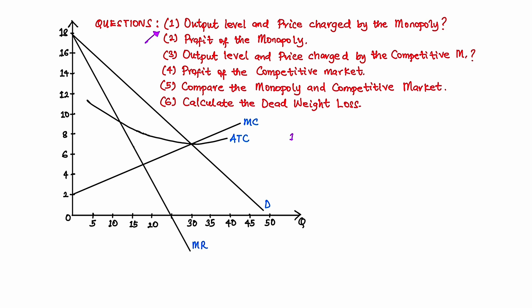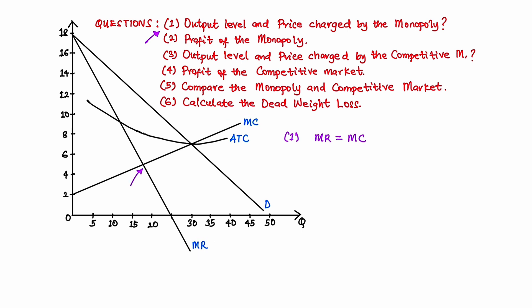To answer question one, we use the profit maximization rule, which says that for any firm to make the maximum profit, a firm will make maximum profit at the point where the marginal revenue is equal to the marginal cost. Given that this is the marginal cost curve and this is the marginal revenue curve, the firm will make maximum profit at the point where the marginal revenue cuts the marginal cost. This means that at this point, the marginal cost is equal to the marginal revenue.